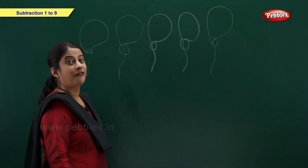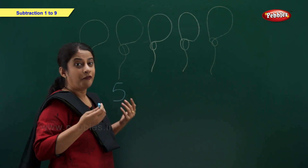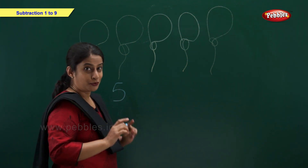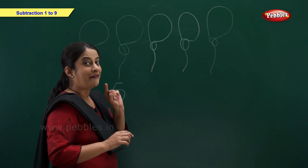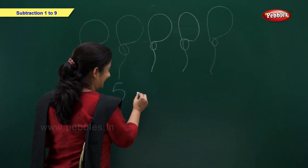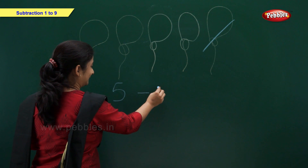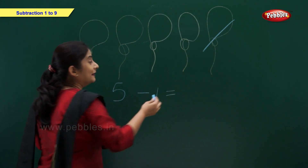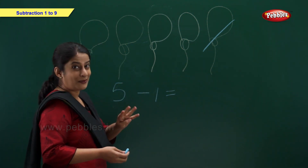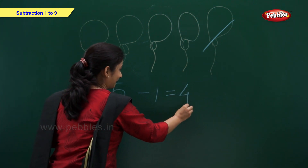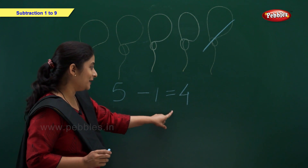I have 5 balloons: 1, 2, 3, 4, 5. 1 balloon flew away. So we'll take away 1 balloon — but remember, we are going to use the minus sign. Take away 1. Now let's count again: 1, 2, 3, 4 — 4 balloons left. So friends, 5 minus 1 is equal to 4.